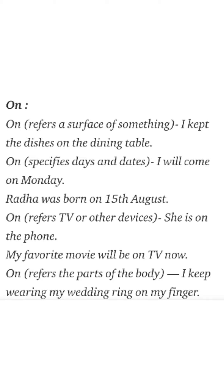First preposition is 'on'. तो ये on preposition कहां-कहां use होती है. On preposition use होती है — it refers to a surface of something. जैसे: I kept the pen on the table. टेबल के ऊपर रखी किसी चीज के लिए हम 'on' use करते हैं.